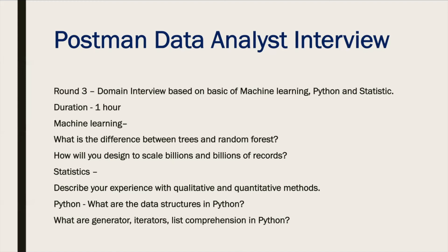In machine learning, they asked about the difference between decision trees and random forests, and how you would design a system to scale to billions of records. In statistics, questions included the difference between qualitative and quantitative methods. There were also coding questions like data structures in Python, or defining generators, iterators, and lists in Python. The difficulty was medium and mode was Hangout, testing in-depth domain knowledge.